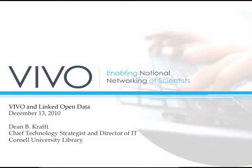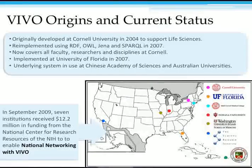I'm going to talk about VIVO, which is a faculty profiling system, and talk about the relationship of the VIVO system with linked open data. VIVO was originally developed at Cornell University in about 2004. It was originally implemented as a relational database system, although sort of building on semantic web ideas, and then re-implemented using actual semantic web tools and technologies in 2007.